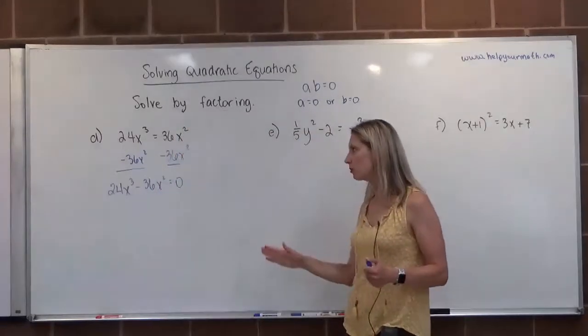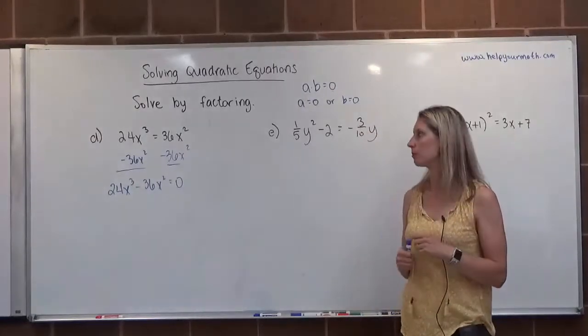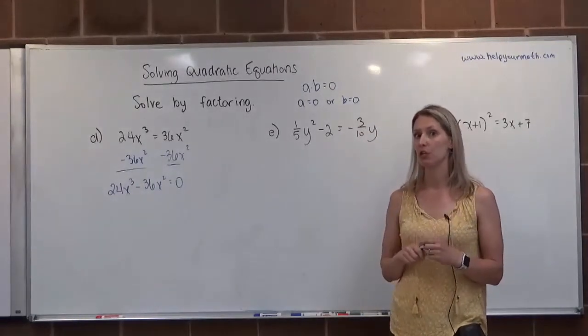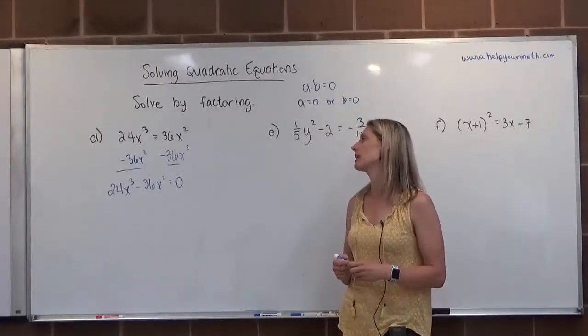Now from here I have a binomial. There's only a handful of things we can do with two terms. The first thing we want to check is is there a GCF? And the answer is yes there is.